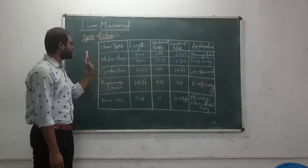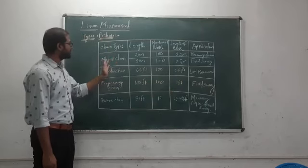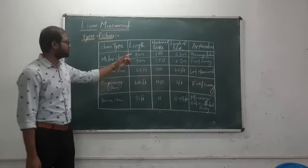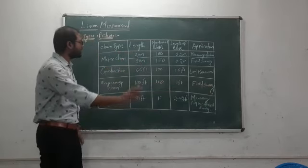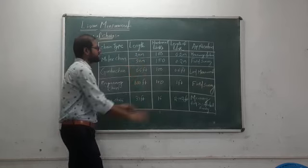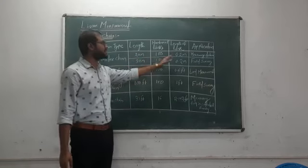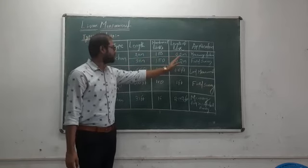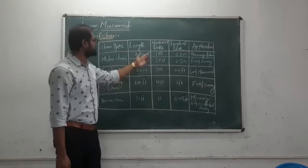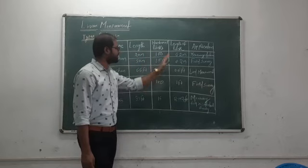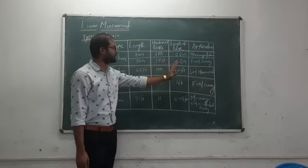Metric chain is available in two formats: 20 meter and 30 meter chain. The 20 meter chain has 100 links, and each link comprises 0.2 meters. The 30 meter chain has 150 links, and each link is also 0.2 meters.